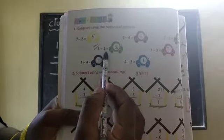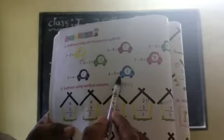3 minus 1, 2. 7 minus 0, 7. 5 minus 4, 1. 4 minus 3, 1.